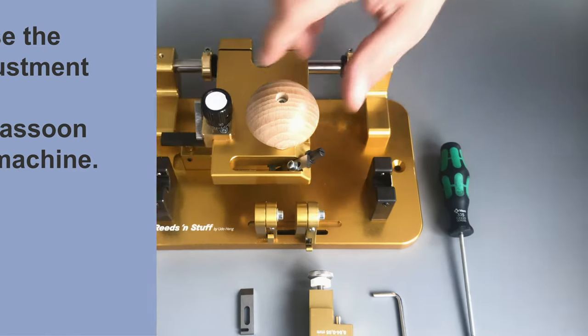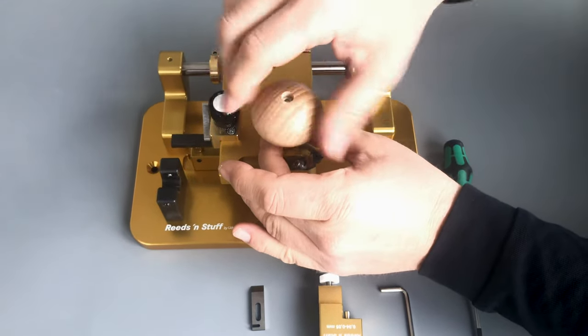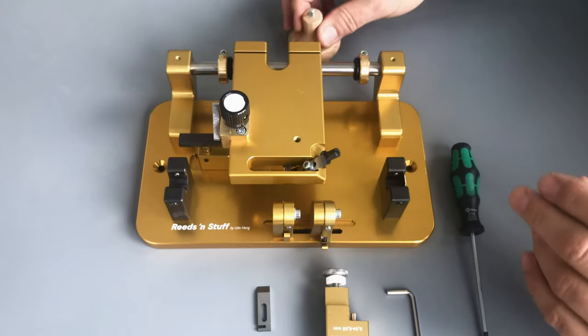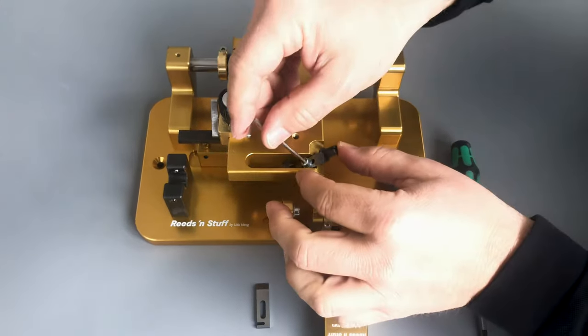Today we will learn how to use the blade adjustment indicator for the bassoon profiling machine. Before you begin, take off the machine's wooden handle and take out the old blade.